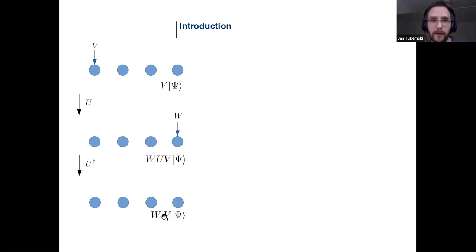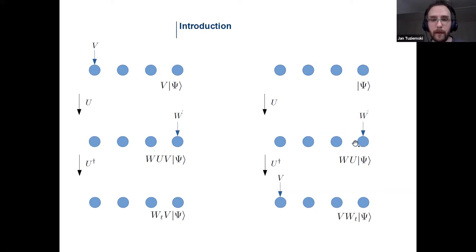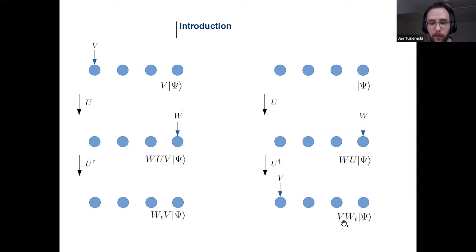Now let me slightly change the order of steps in that protocol. First I prepare the qubits in the same state psi as before. Then I do the forward time evolution, apply W to the last qubit of the chain, do the backward time evolution, and then apply V to the first qubit. In this way I prepare a different state: VW(t) acting on psi.